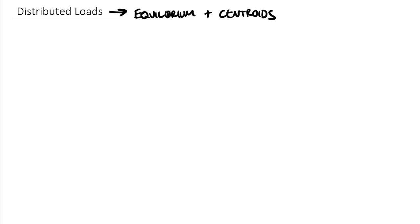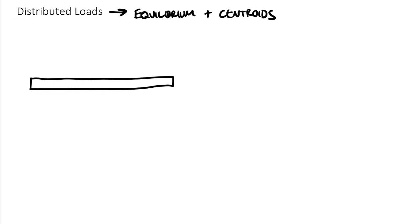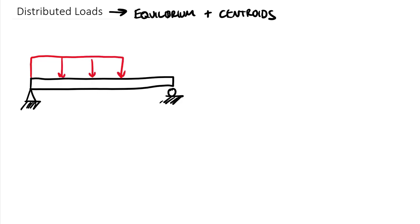If we have a beam — remember a beam is a structural member which carries loads by bending — and we have a pin at the left end and a roller on the right end, and we put a distributed load on it. A distributed load is a load that is spread out over space. This example shows a constant value distributed load.